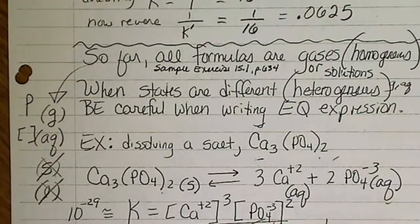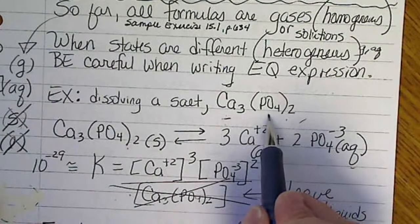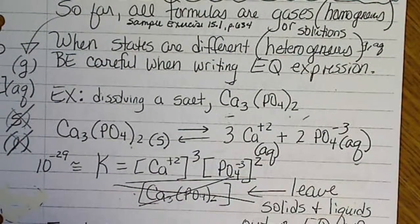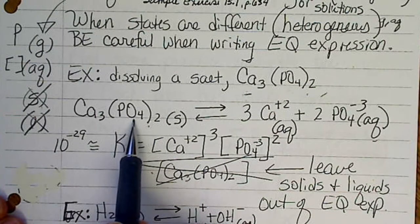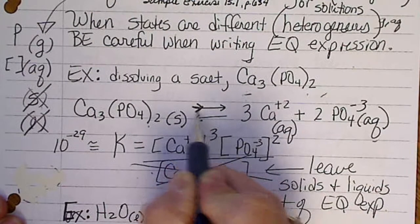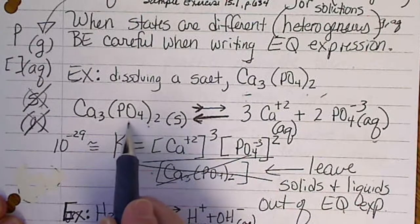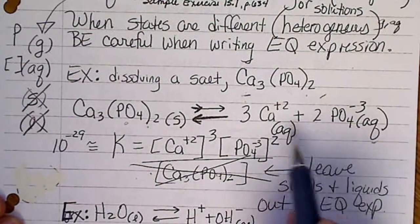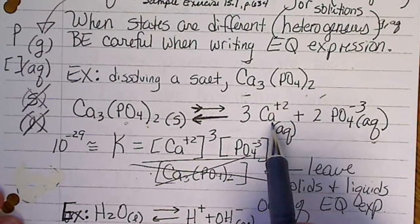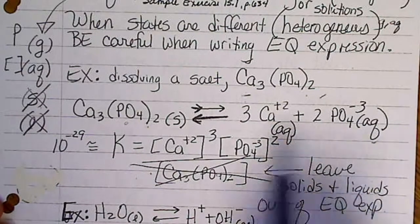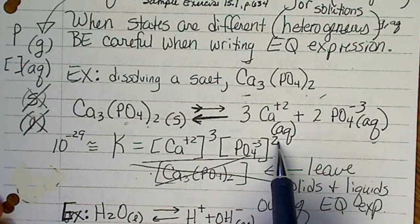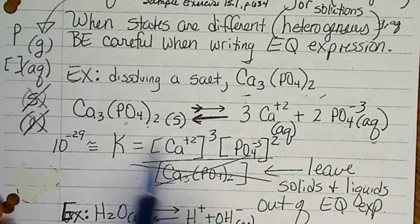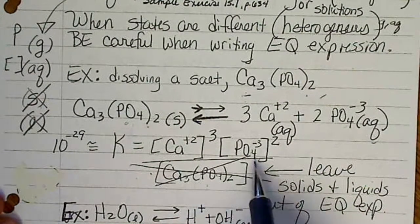An example is trying to dissolve calcium phosphate. Phosphates are notoriously insoluble, so this reaction won't go very far to the right — perhaps only the corners of the crystal lattice will be pulled away, giving a few calcium ions and a few phosphate ions in solution. When we write the equilibrium expression, calcium is raised to the power of three (three moles) and phosphate is raised to the power of two (two moles) in concentration units. The solid calcium phosphate is not included in the expression.